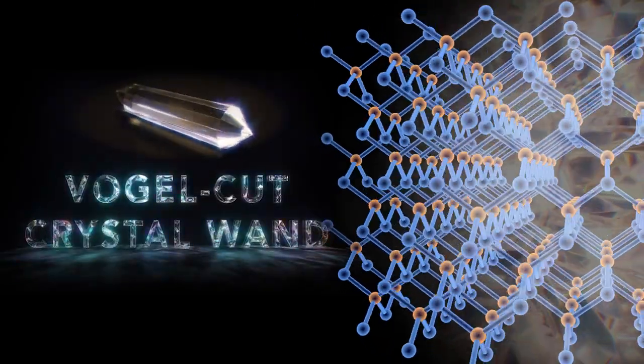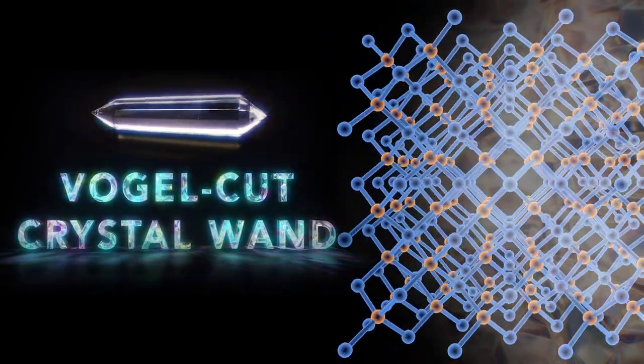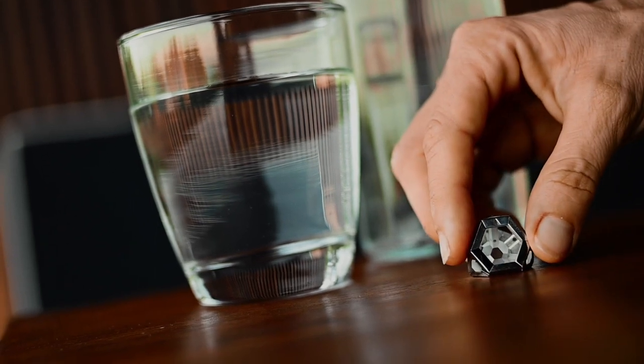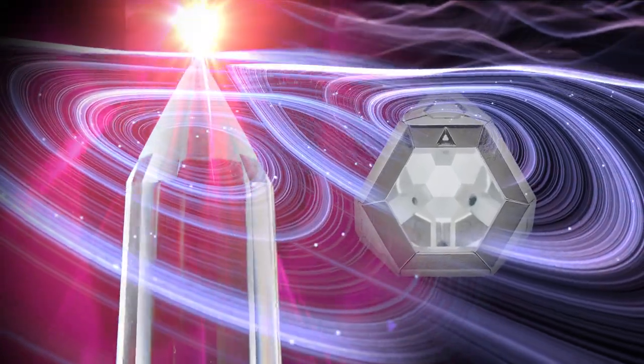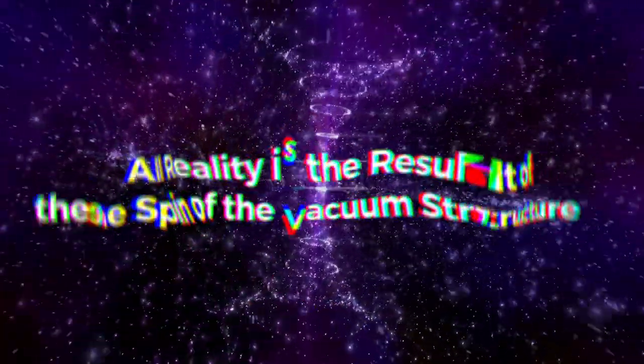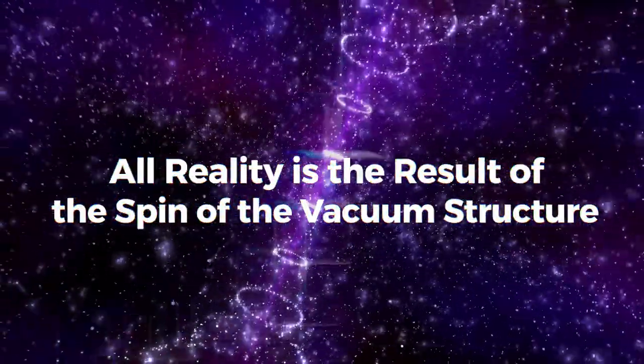The quartz crystalline lattices of the Vogel-cut wand can couple with oscillations of the quantum vacuum fluctuation engineer in the arc crystal, meaning they can affect each other and influence each other's energetic movements. All reality is the result of the spin of the vacuum structure.